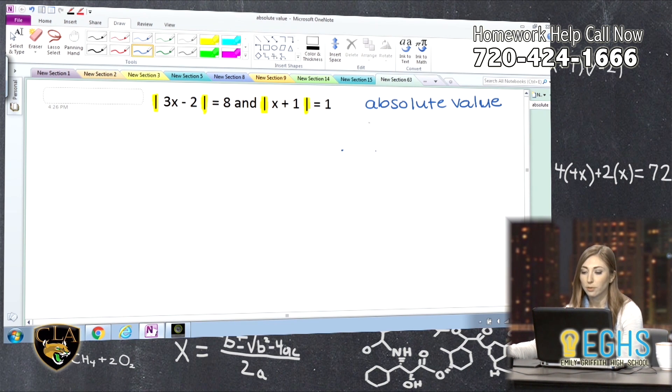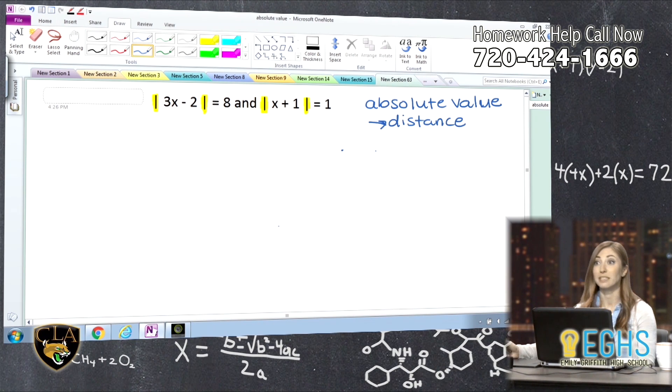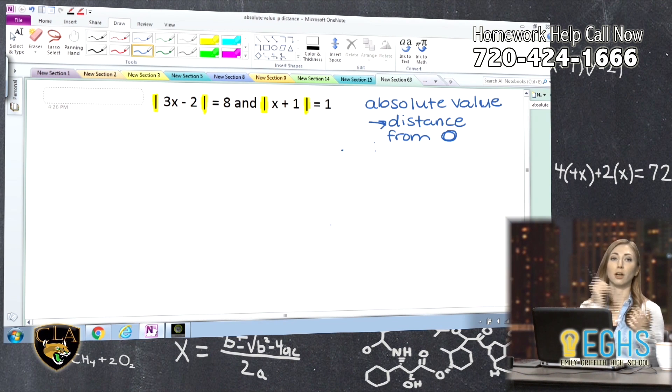And let me just kind of break these down just a little bit so we know why we're doing what we're doing when we solve. So the absolute value, what it's really referring to is the distance of something from zero. So distance from zero.